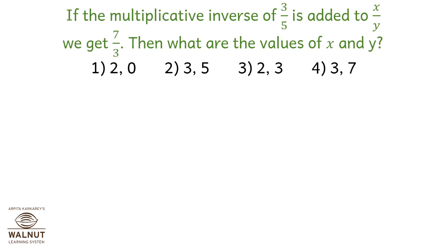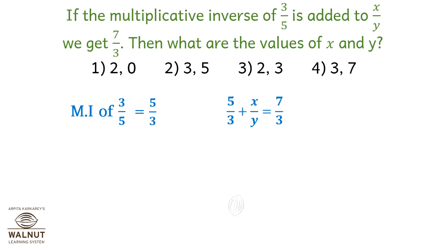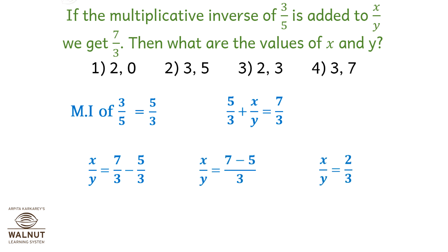Next question. If the Multiplicative Inverse of 3 by 5 is added to x upon y, we get 7 upon 3. Then what are the values of x and y? The Multiplicative Inverse of 3 by 5 is 5 upon 3. So 5 upon 3 plus x upon y equals 7 upon 3. Therefore x upon y is 2 upon 3. So the correct answer is option number 3: x = 2 and y = 3.